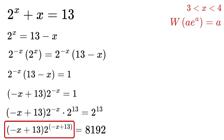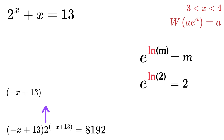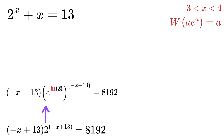Now we can see that we are getting the same type of expression required for the Lambert W function. But we just need to bring e into the expression to use the W function. We know that e raised to log of any number equals that number itself, so e raised to log 2 equals 2. This gives us minus x plus 13, multiplied by e raised to log 2, whole raised to the power minus x plus 13, equals 8192.